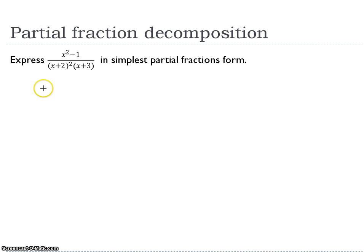In this example, I'll show you how to express a rational function in the simplest partial fraction form. So we have x squared minus 1 divided by (x plus 2) squared times (x plus 3).